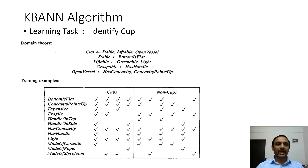Knowledge-Based Artificial Neural Network (KBANN) uses prior knowledge to design interconnections and weights in an initial network. After that, it uses the pure inductive method backpropagation on the designed initial network to adjust the weights and get the complete design. To discuss this algorithm, we use the example of identifying a cup. For this example, the domain theory required is that a cup must be stable on the table, liftable, and an open vessel.